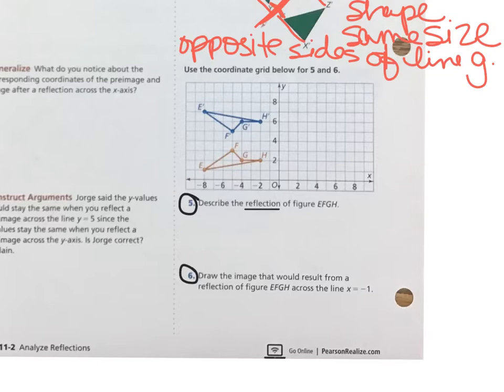So you see EFGH, it's in red. Let me get my red pen out here and let's trace that. So here's EFGH back to E.